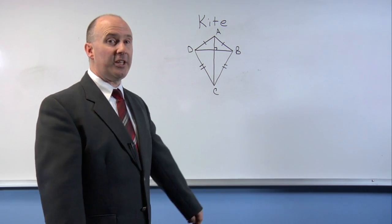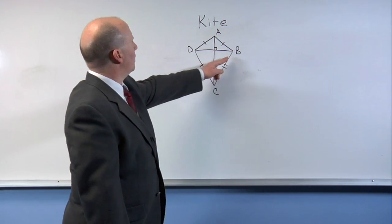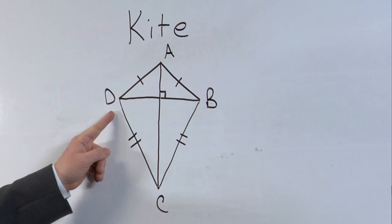However, let's take a look at the other diagonal, diagonal B, D. Here is the line, the diagonal, and let's see if it bisects angle A, D, C.